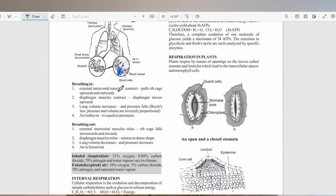For breathing in, the external intercostal muscles must contract, and that pulls the ribcage upwards and outward. Also, the diaphragm muscles will contract and the diaphragm moves downward. The lung volume increases and the pressure falls. Then air can move in to equalize the difference in pressure.